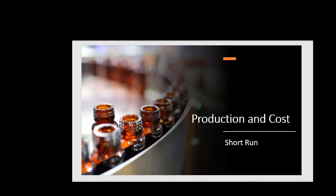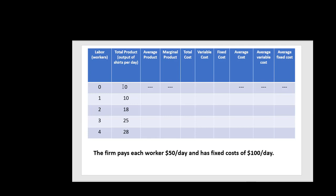In this video, we're going to look at production and cost in the short run when capital is fixed and labor is a variable input. Our goal is to complete this table. We have the number of workers that a firm can hire or use during a day and the output given from those workers.